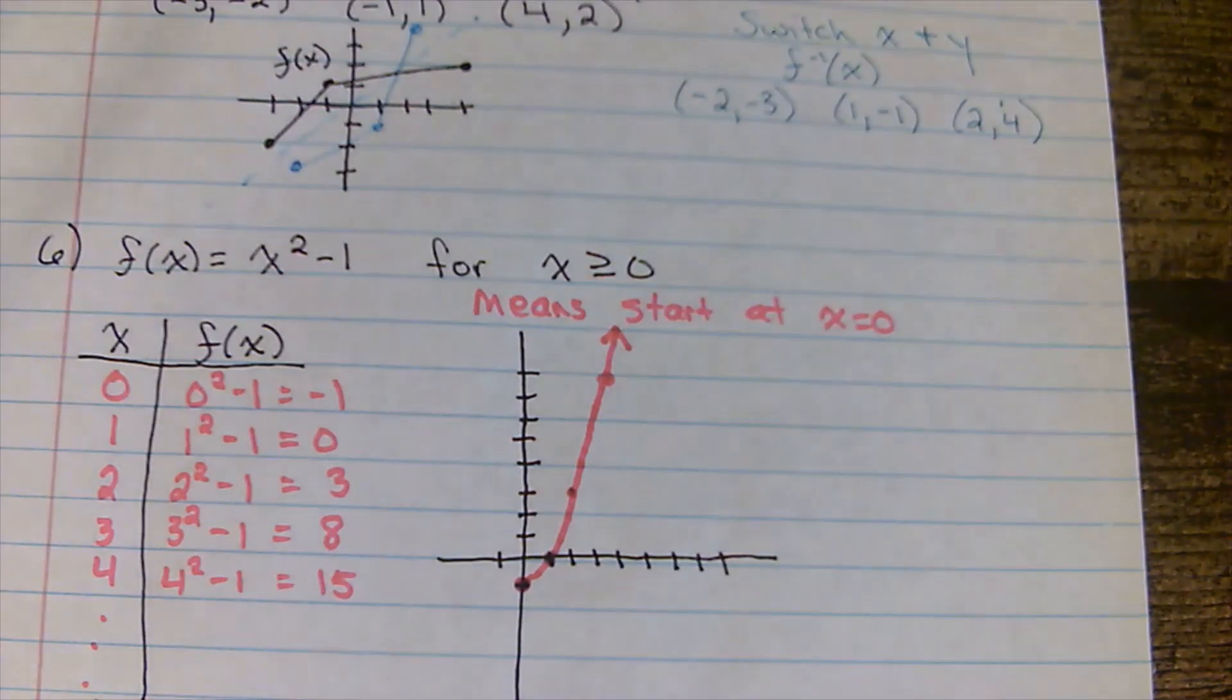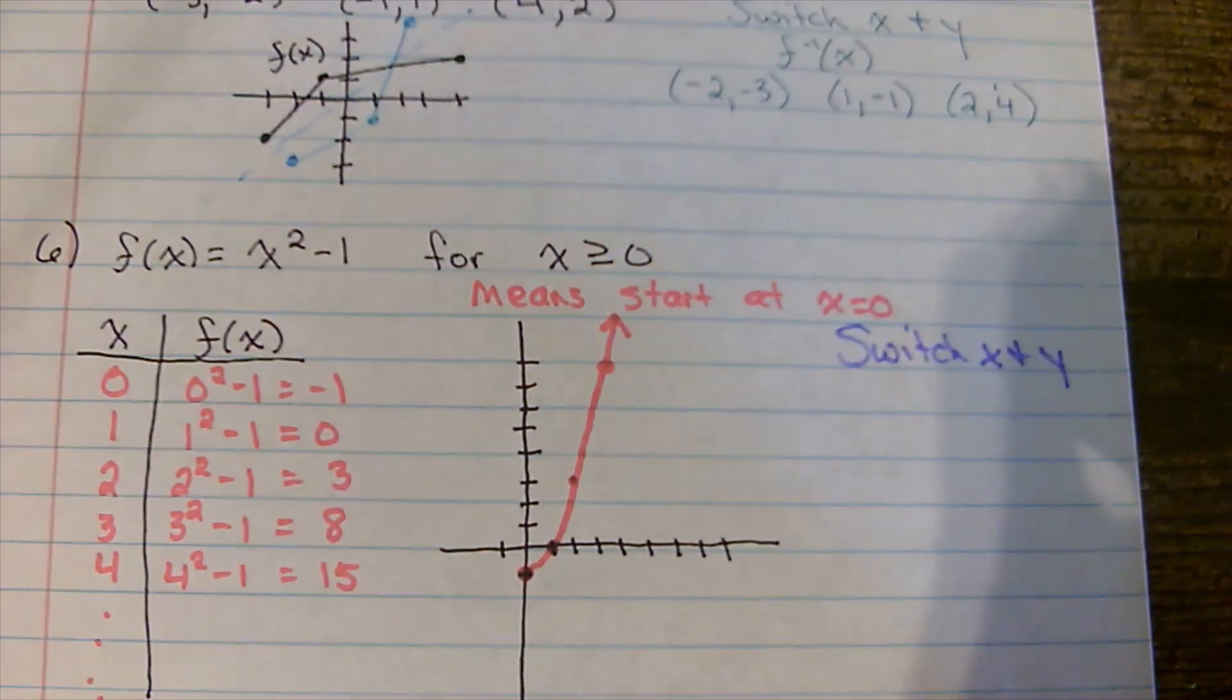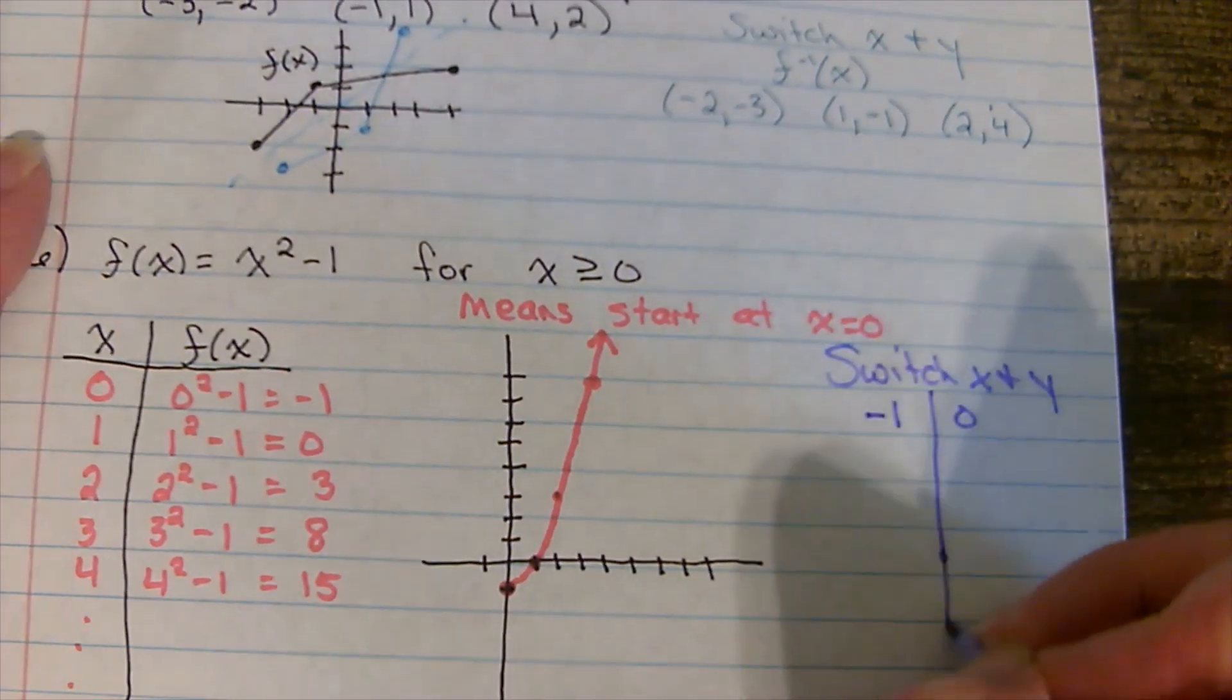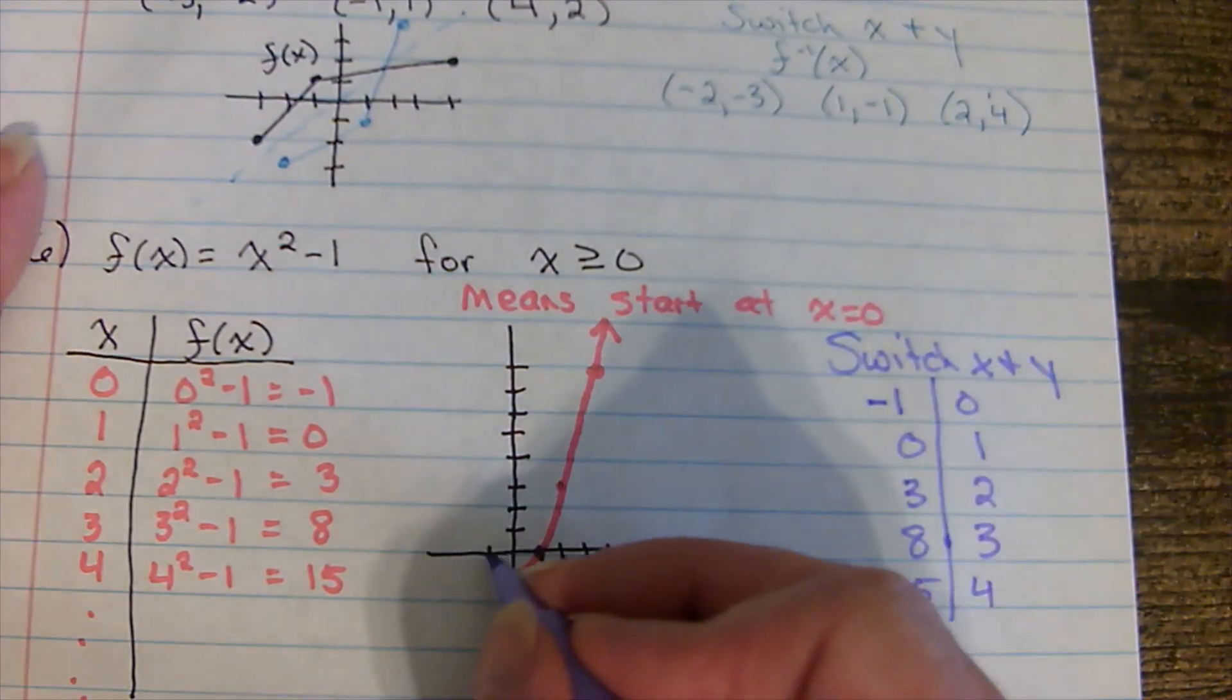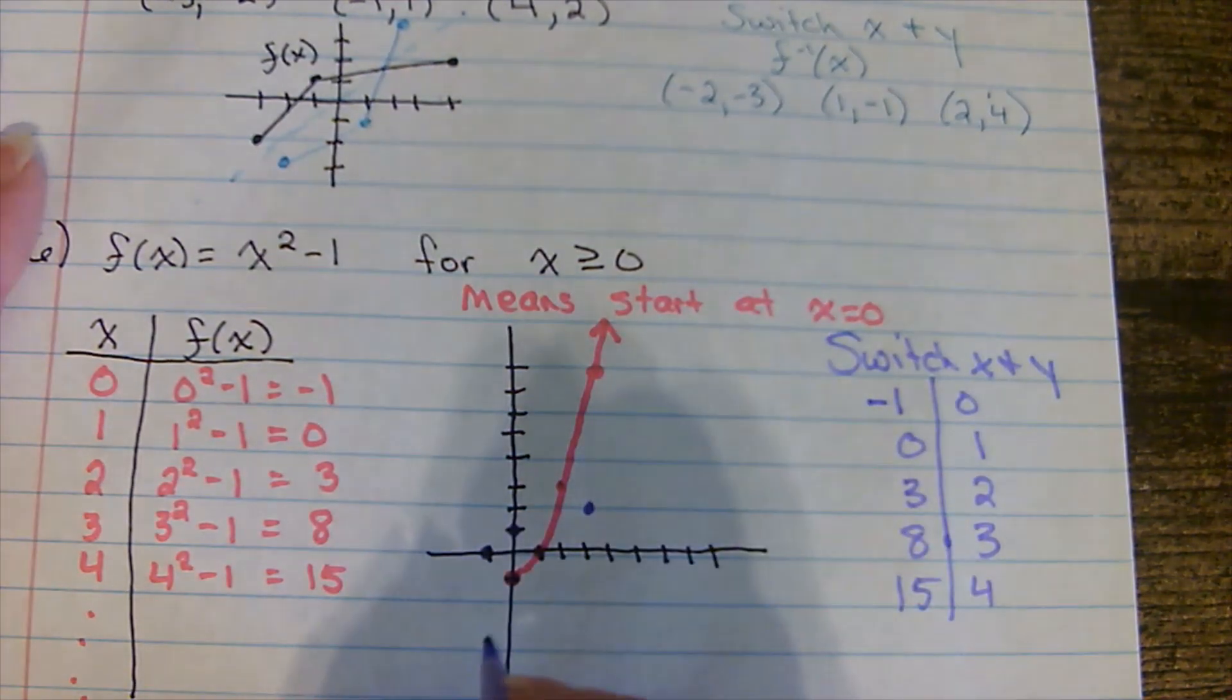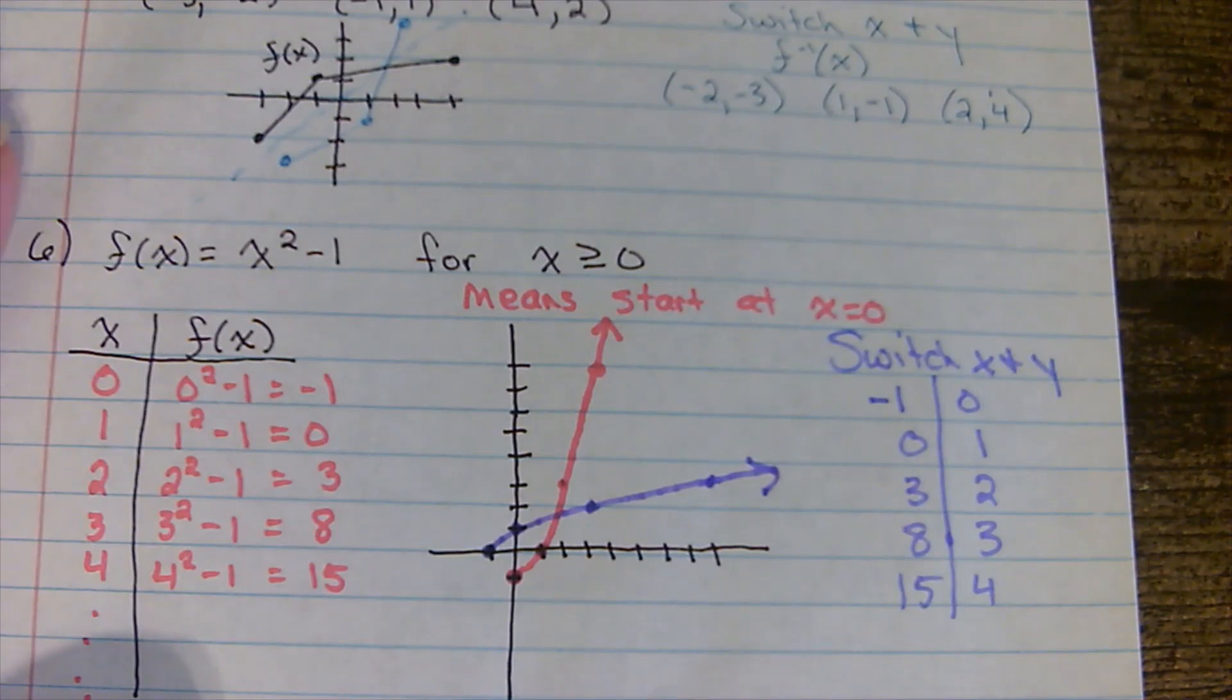Now my inverse, I'm going to switch x and y. So my inverse function, we're going to switch them. So my table would be negative 1, 0, 0, 1, 3, 2, 8, 3, and so forth. 15, 4. Negative 1, 0, 0, 1, 3, 2, 8, 3. And I'm getting this kind of mirror image thing going on.